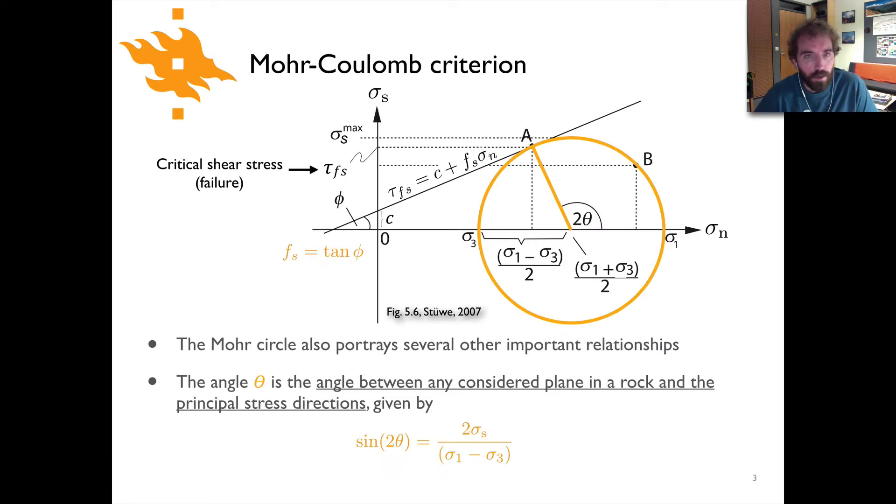Here is again our Mohr circle diagram that we have seen previously. I'll just remind you quickly we're looking at shear stress versus normal stress on the two axes. This straight line would be the frictional strength of the rock which shows the relationship between shear stress, cohesion, the friction coefficient, and normal stress that plots as a straight line on a Mohr circle diagram.